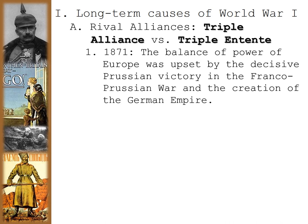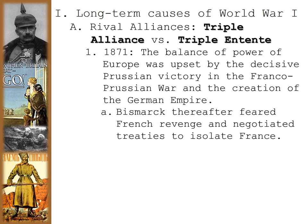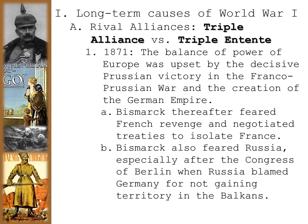In 1871, the balance of power of Europe was upset by the decisive Prussian victory in the Franco-Prussian War and the creation of the German Empire. Bismarck thereafter feared French revenge and negotiated treaties to try to isolate France, just in case there were future problems. Bismarck also feared Russia, especially after the Congress of Berlin, when Russia blamed Germany for not gaining territory in the Balkans region.